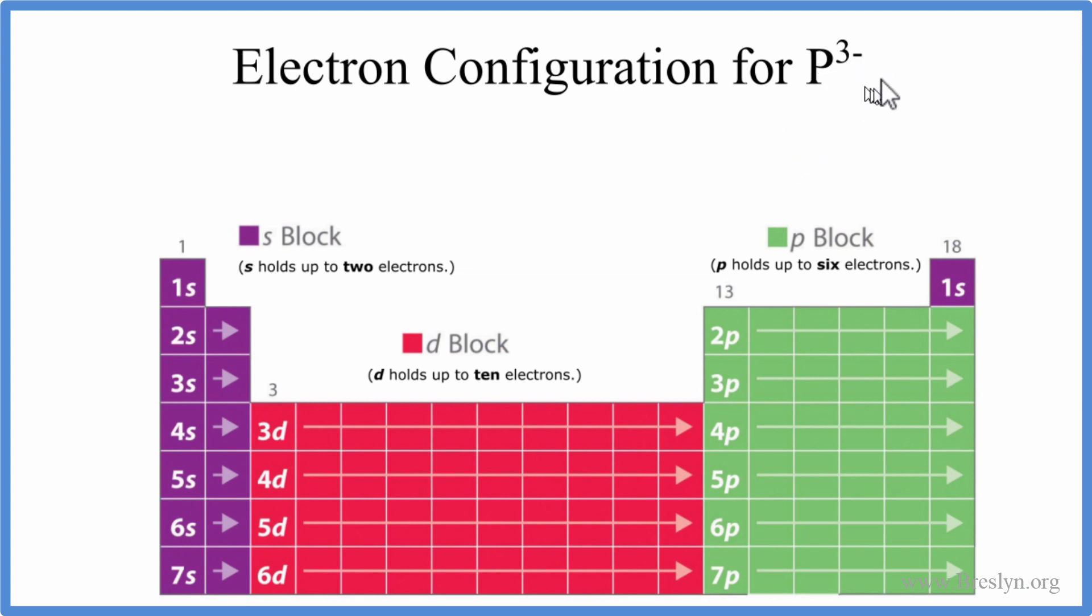But before we write the electron configuration for the phosphide ion, let's just do neutral phosphorus. We say this is neutral because it doesn't have a plus or a minus sign like the phosphide ion up here.